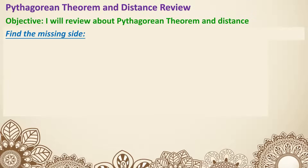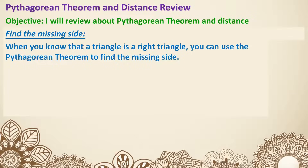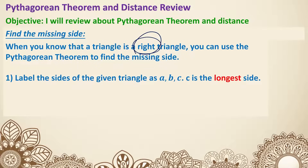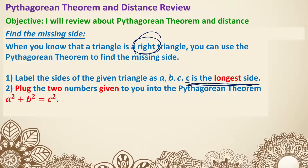To find the missing side using the Pythagorean theorem, when you know that a triangle is a right triangle — and remember, the Pythagorean theorem only works for right triangles — you can use it to find the missing side. First, label the sides of the given triangle as A, B, and C. It doesn't matter which side you label A or B; they're just legs. The important thing is you must label C as the longest side. Then plug the two given numbers into A squared plus B squared equals C squared, and solve for the remaining variable.